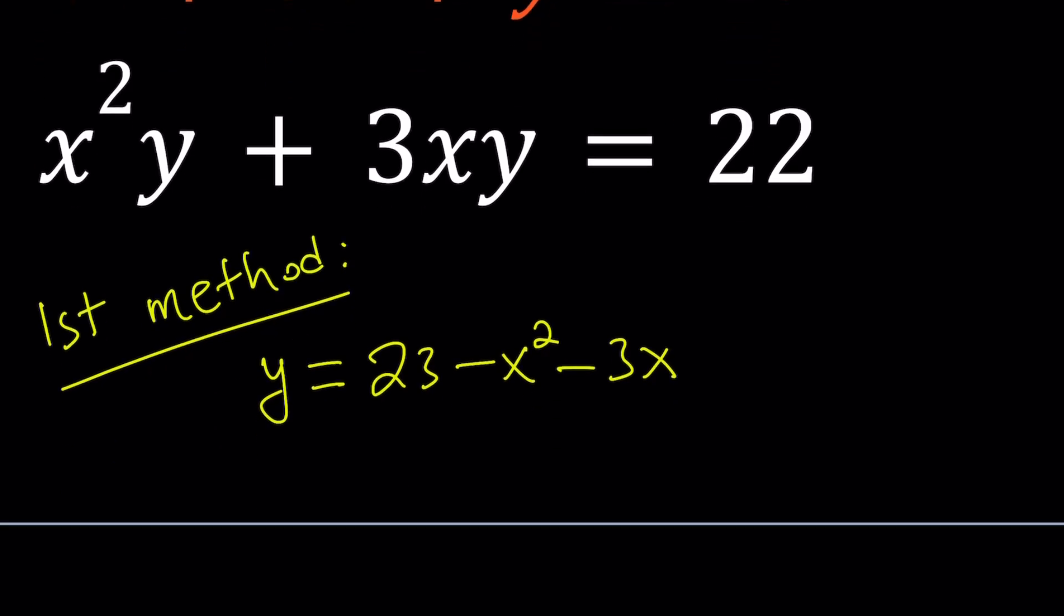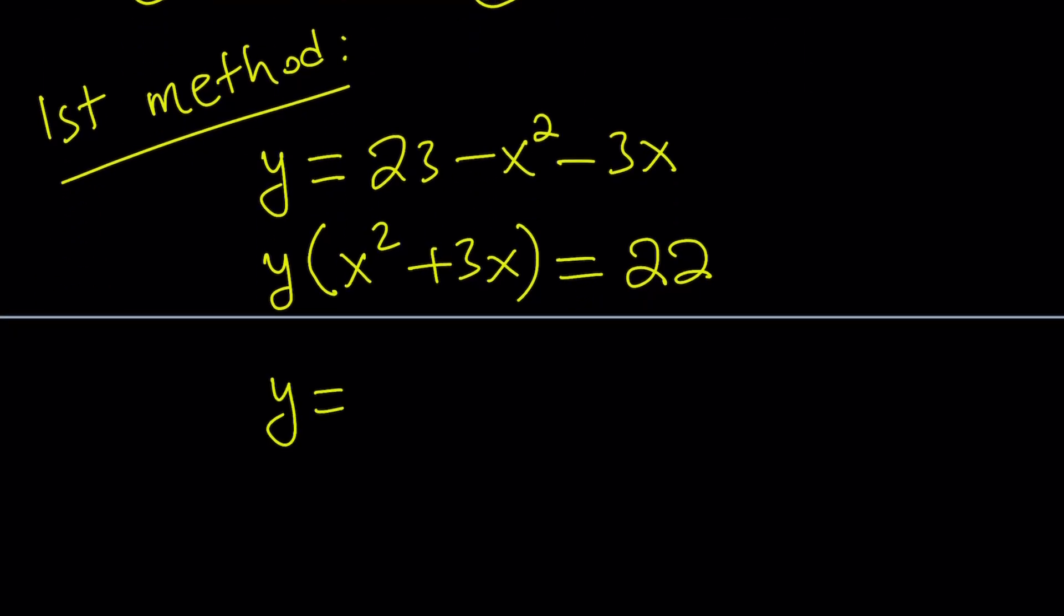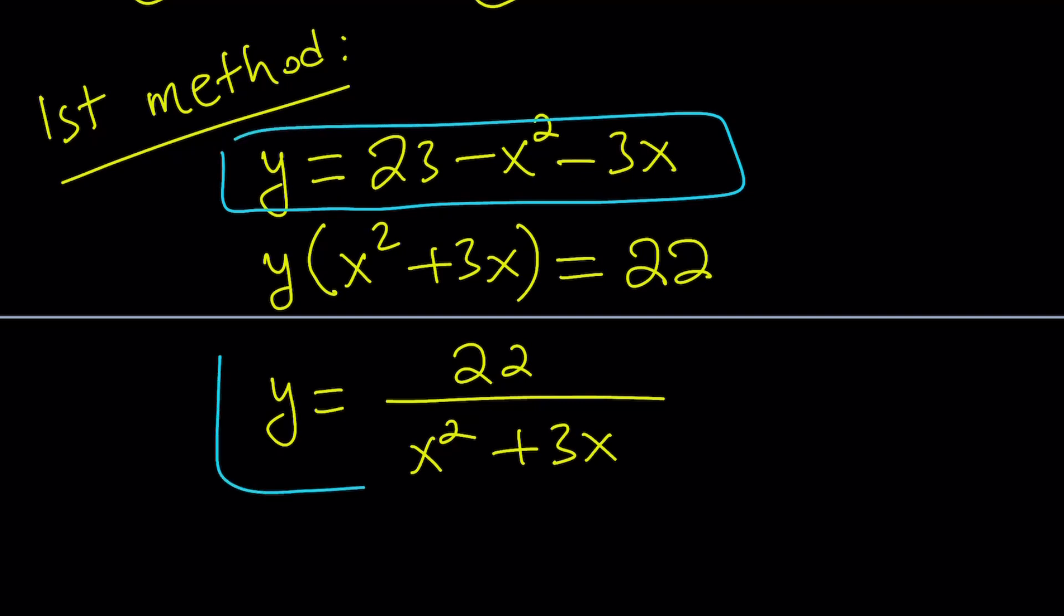And from the second equation, notice that we could also factor out a y and isolate it. But let's factor it first. If you take out y, you're going to get x squared plus 3x, and that is equal to 22. So we can isolate y. Y is going to be 22 over x squared plus 3x. And now we have two equations for y. The first one being this, and the second one being this.